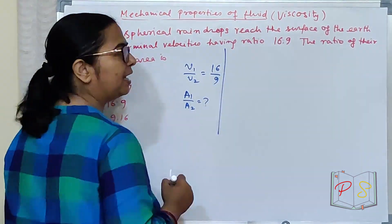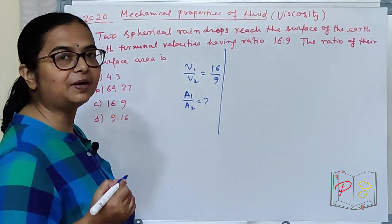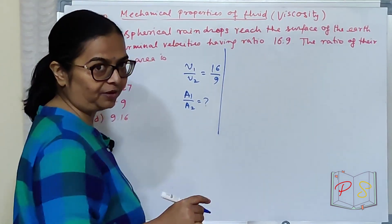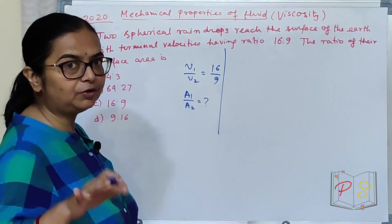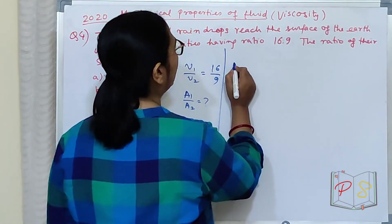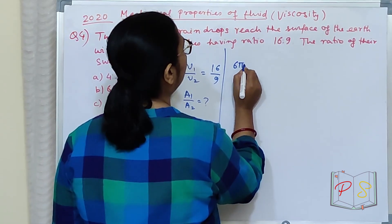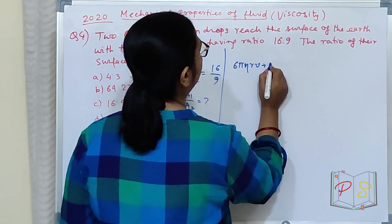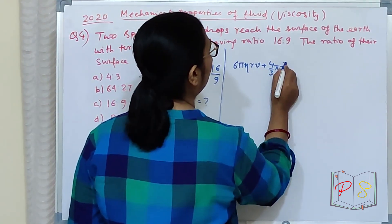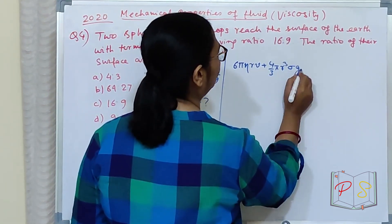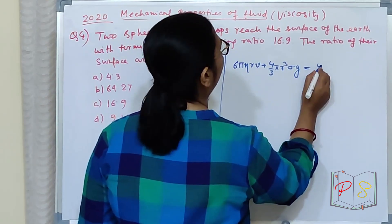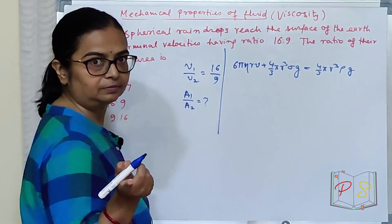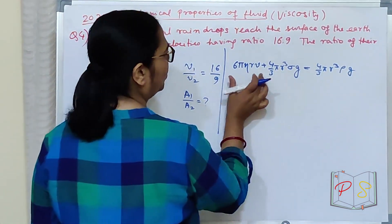Aagir aapko formula yad hai toh bohut hi easy hai. Main pakar liyati hu aapko formula yad nahi hai. Isi liye main last line karte likhaun ghi. Total upward force equal to total downward force. Total upward force kya hai? 6 pi eta r v. Viscous force. Part plus 4 third pi r cube into sigma into rho equal to 4 third pi r cube into rho into g. This is downward, this is upward, this is upward.